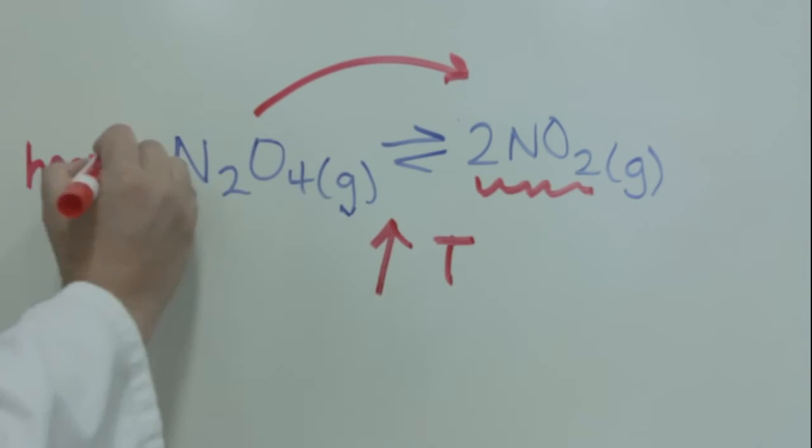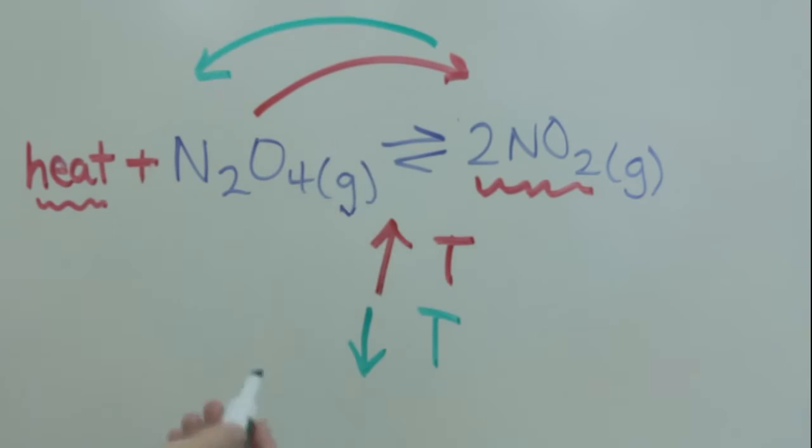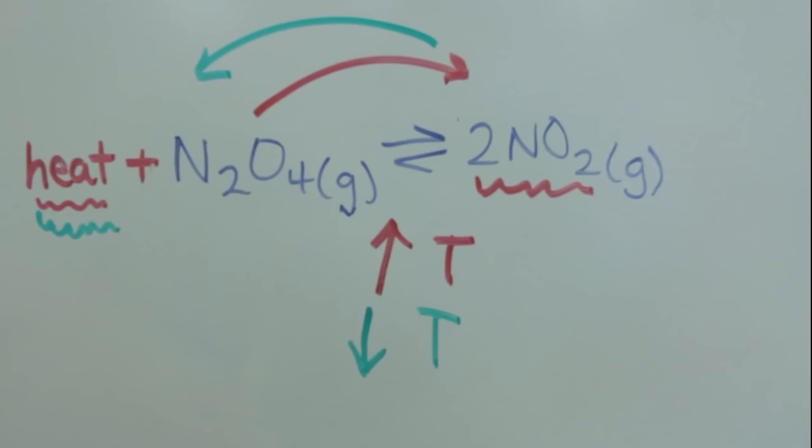As observed by the increased intensity of the brown, increasing the temperature shifted the equilibrium to the right. This means that heat is a reactant and the equilibrium was shifting to the right in order to use up the excess heat.